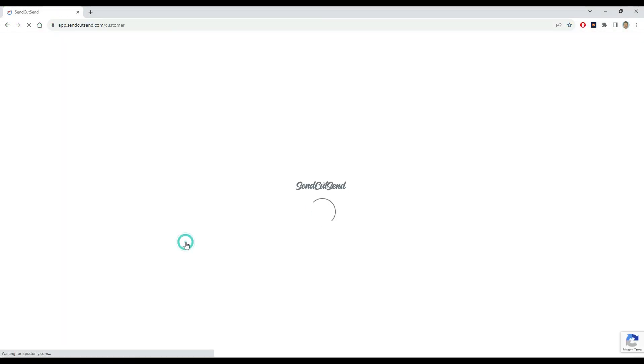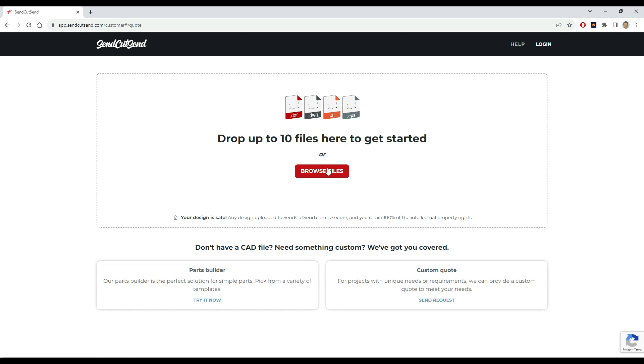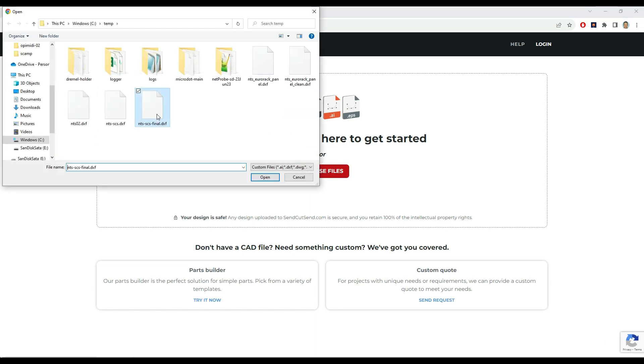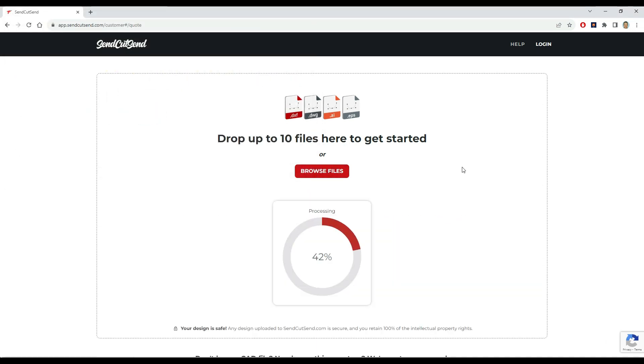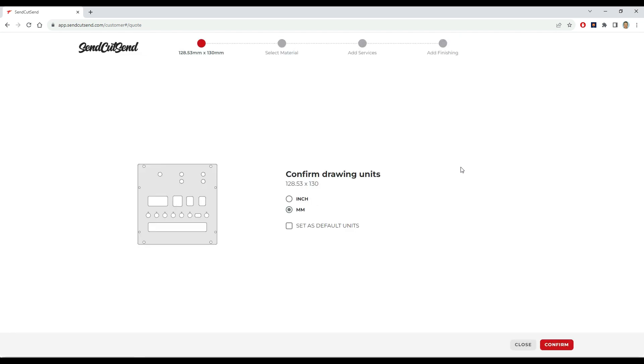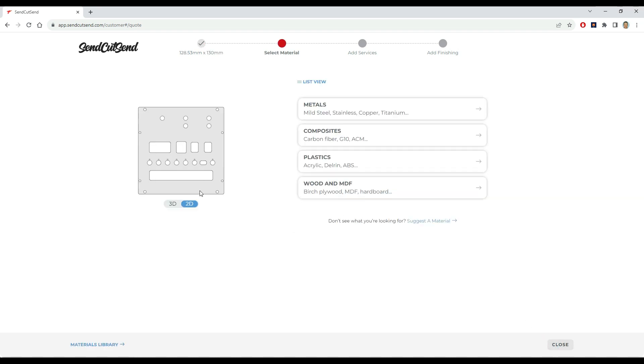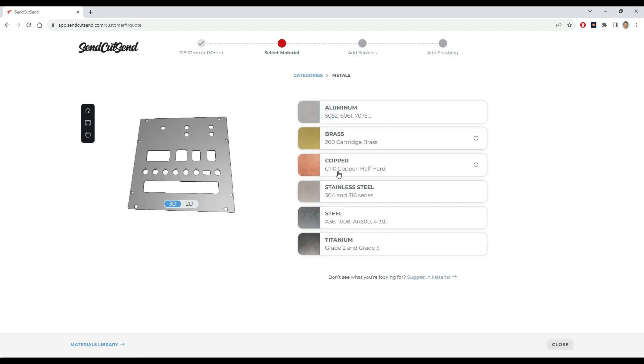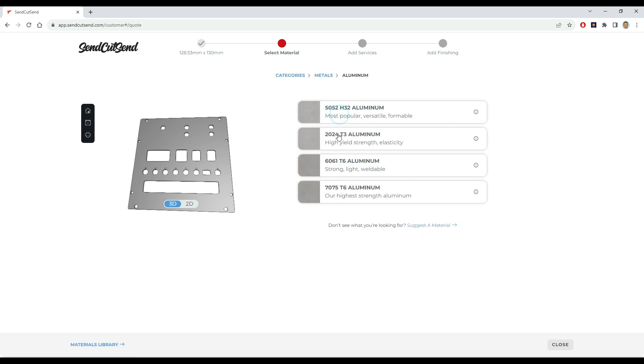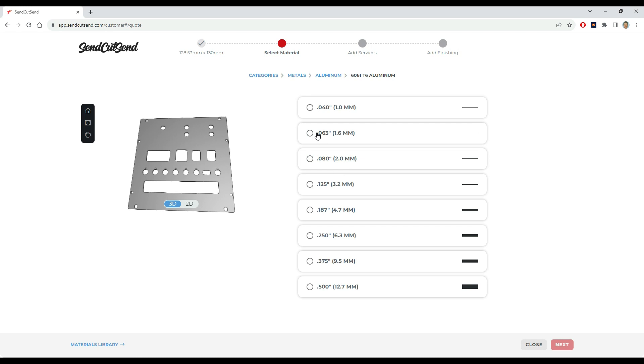Then it's just a matter of going to Send Cut Send's website and uploading that file. Then you get a view of what that's going to look like, and that all looks good. When you request the metal version of this, you just check it looks okay and check what version of metal you want to use. I ended up using this 6061 version of aluminum, and I went with 1.6 millimeter thickness.